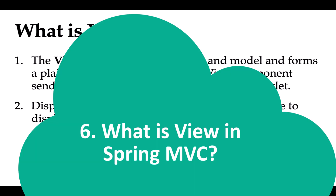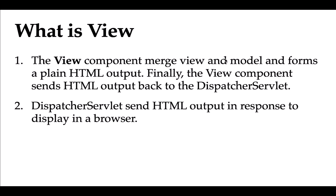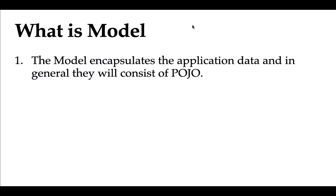The View component merges the view template and model data and produces a plain HTML output, which it returns to the Dispatcher Servlet. The Dispatcher Servlet then sends that HTML output as a response to the browser for rendering. The Model is a Java POJO class that encapsulates the application data. The Spring MVC controller is responsible for creating the model, storing the application data in it, and returning it to the Dispatcher Servlet.